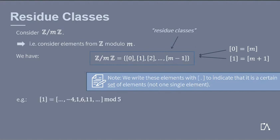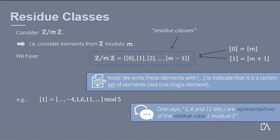For instance, the residue class of 1 modulo 5 contains also the minus 4, 6 and 11. Those values are all equal to 1 up to a multiple of 5. One says that 1, 6, and 11 are representatives of the residue class 1 modulo 5.